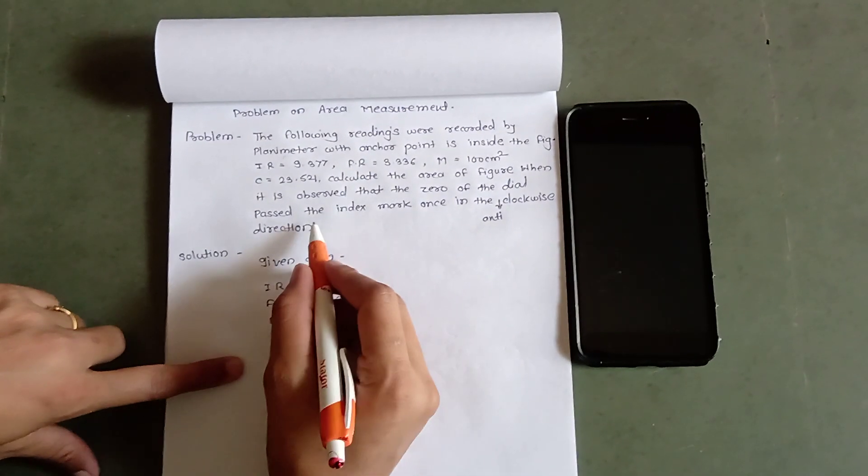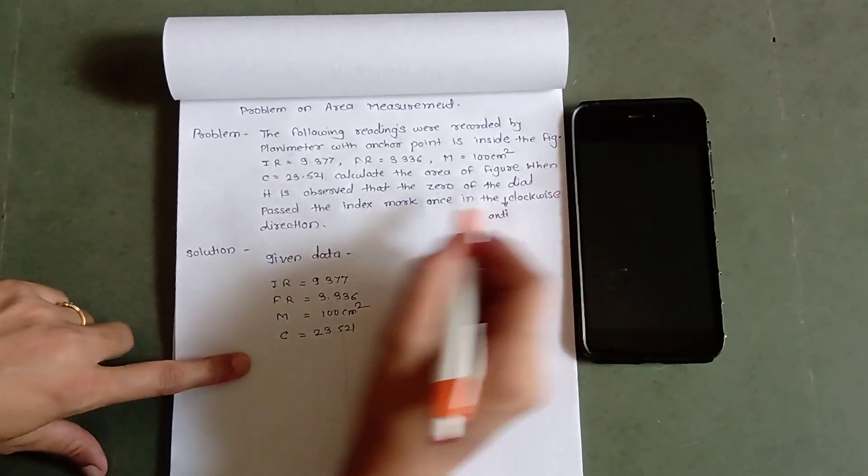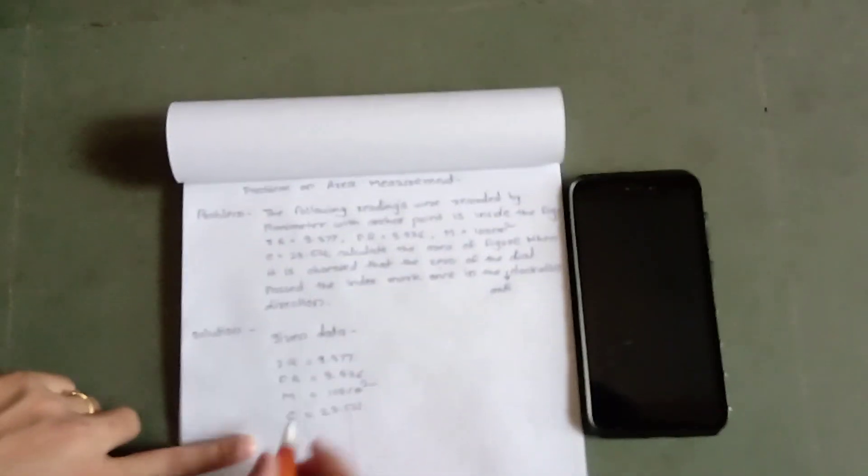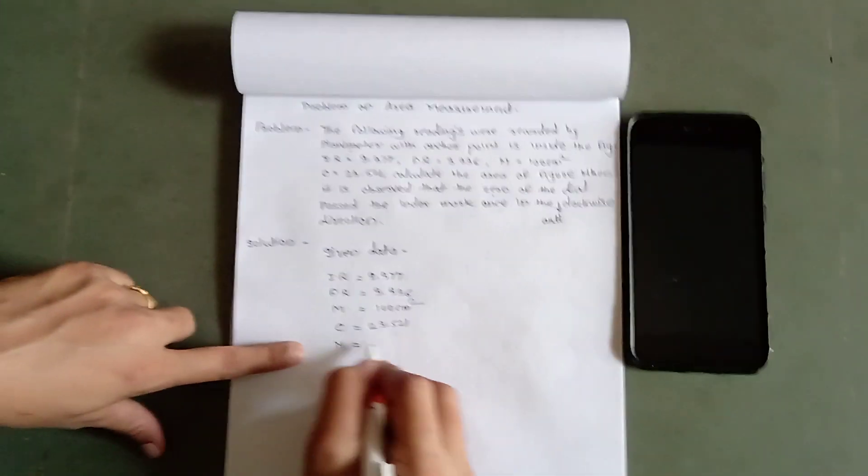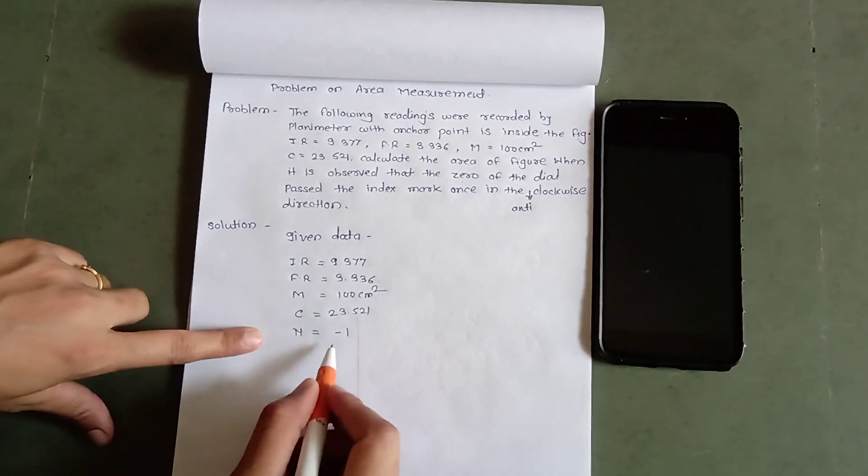Again, in the problem, it is given that the zero of the dial passed the index marks once in the anticlockwise direction. So value of N equals minus 1 because it is in the anticlockwise direction.